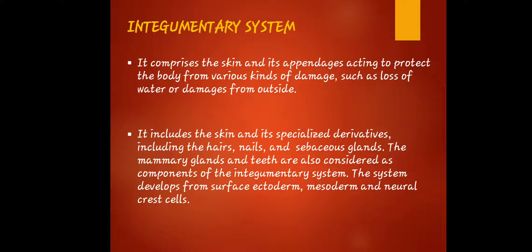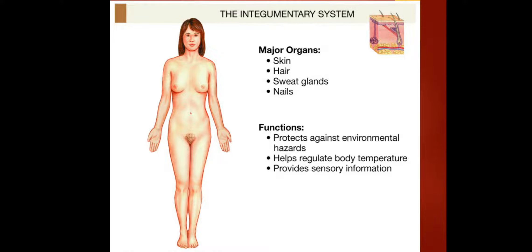The terms ectoderm, mesoderm, and neural crest cells will be discussed further in the next slide. The major organs of the integumentary system are skin, hair, sweat glands, and nails. Since the integumentary system is the largest organ system and the largest organ in it is the skin, it protects against environmental hazards, helps regulate body temperature, and provides sensory information.